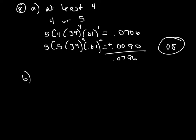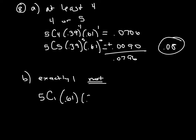Part B wants you to find the probability that exactly one of the five students will not be on a team. For exactly one, we're going to do 5C1. Since they want the probability that they will not be on a team, we put the probability of not being on a team in the first parenthesis, which is 0.61, and the probability that they will be on a team goes in the second parenthesis. Whatever number is to the right of the C goes on your first parenthesis, and since 5 minus 1 is 4, we put a 4 on the second exponent. When you plug it in and round to the nearest hundredth, you get 0.07.